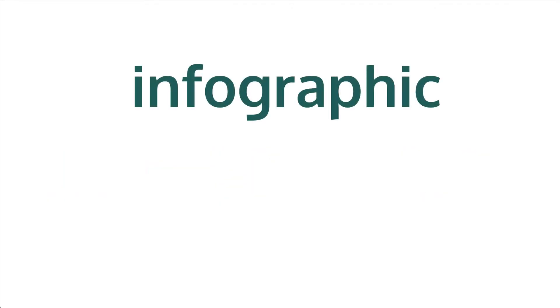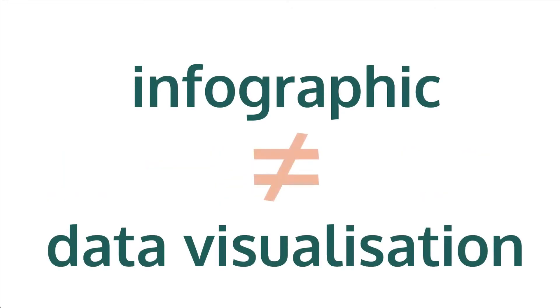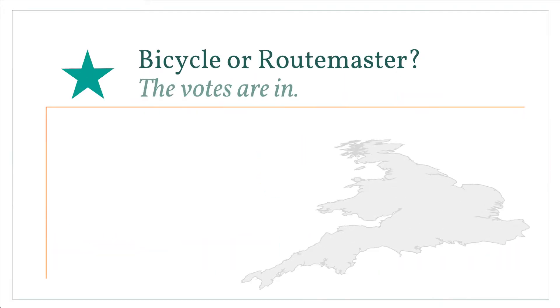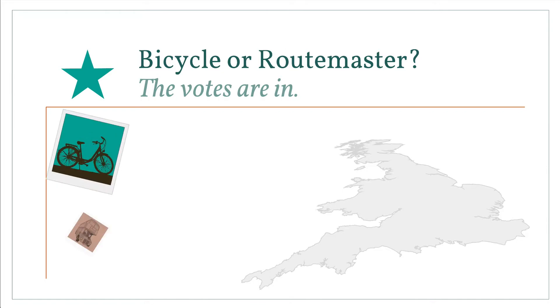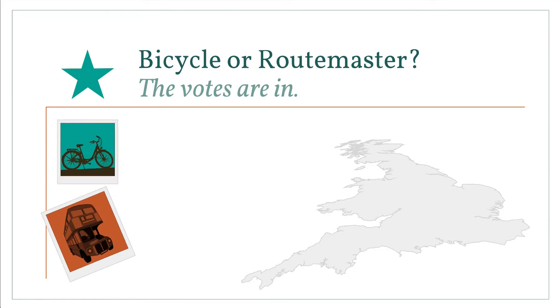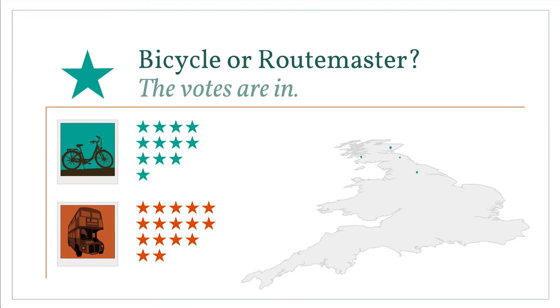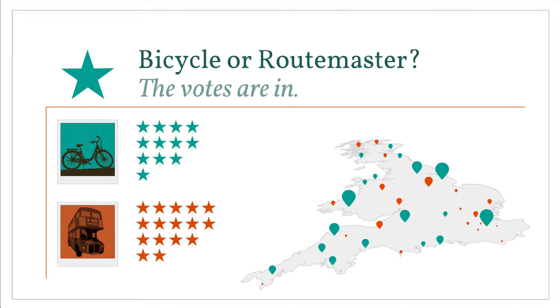Maybe you have seen or heard the term infographics. An infographic is similar to a data visualisation, but the two things are not exactly the same. An infographic is designed to tell a particular story to a specific audience. It might include images or information, but usually it doesn't include data.